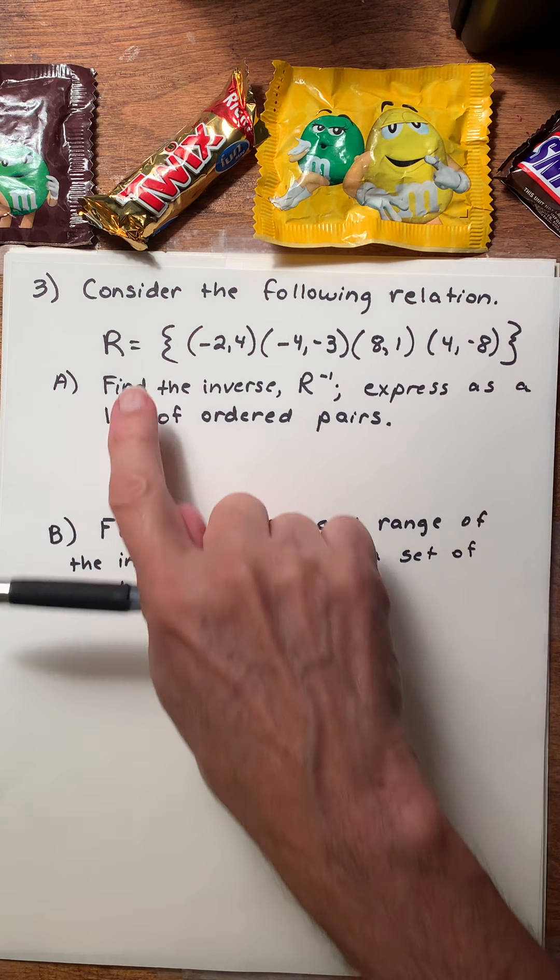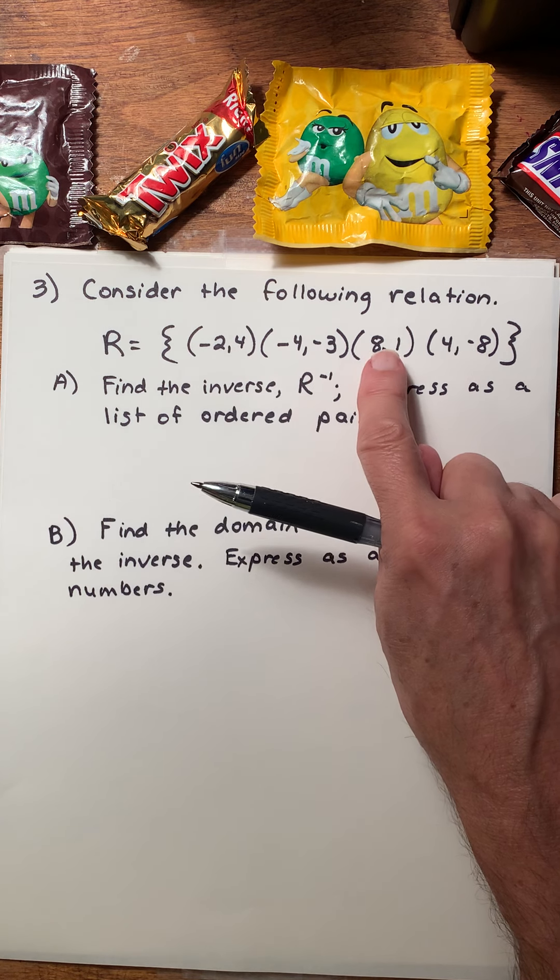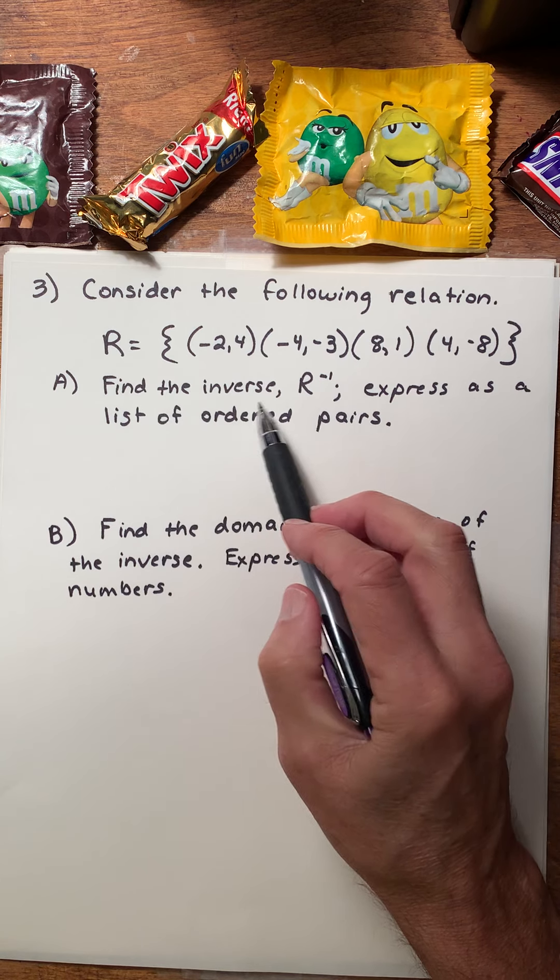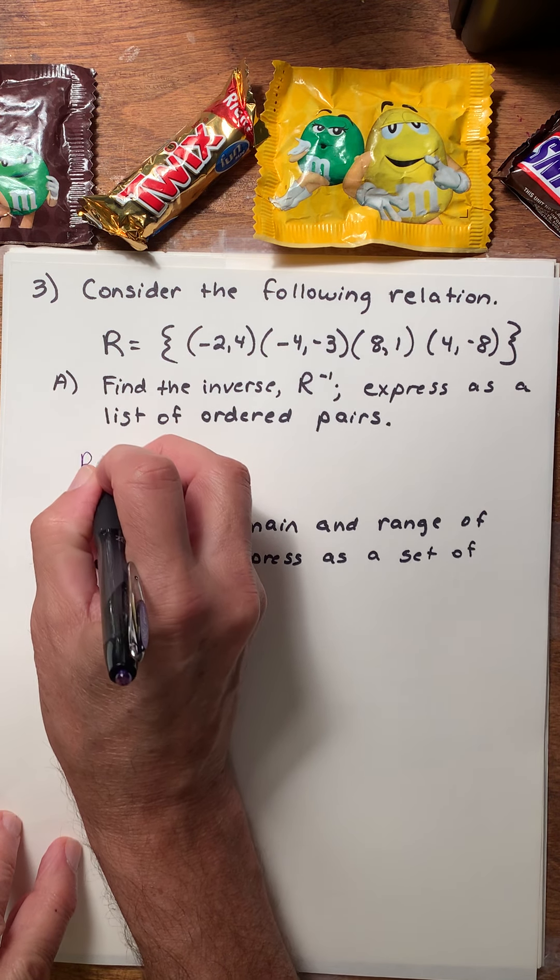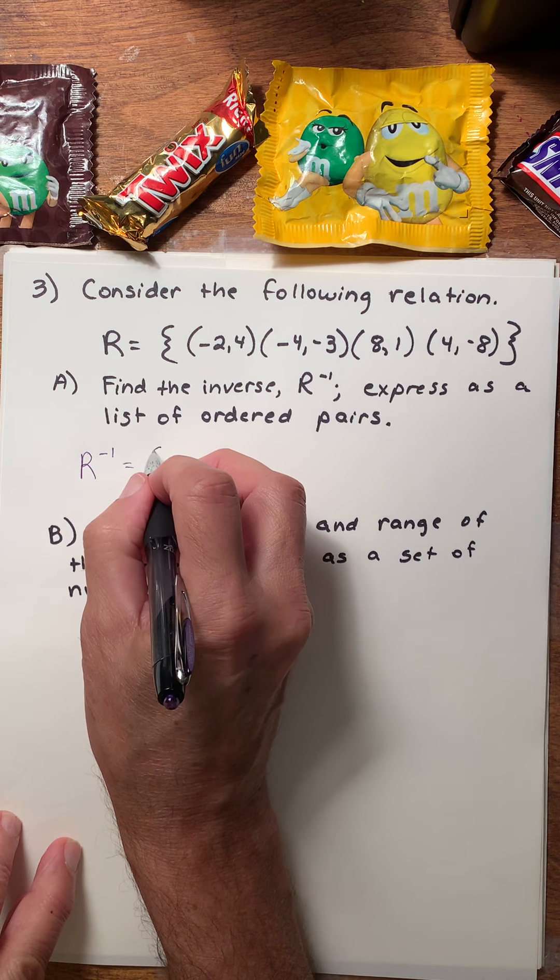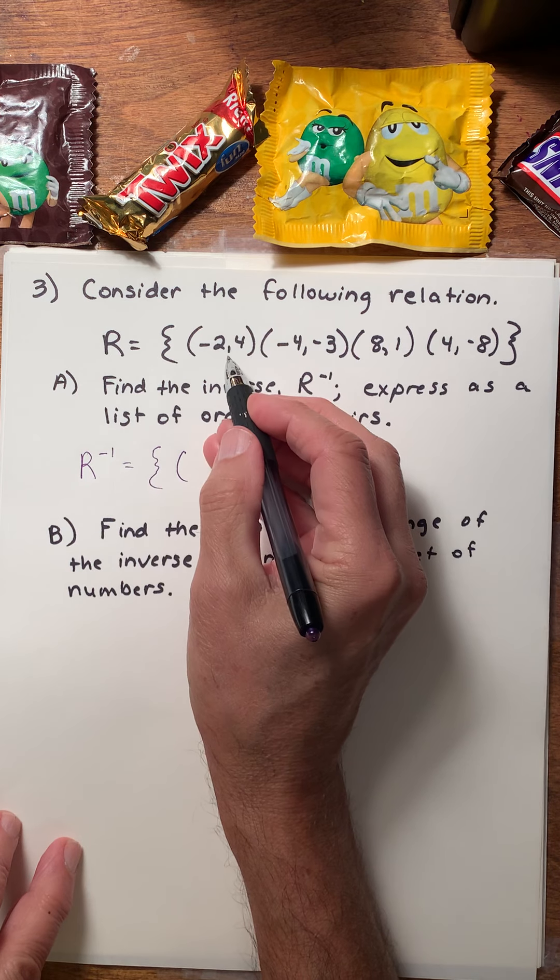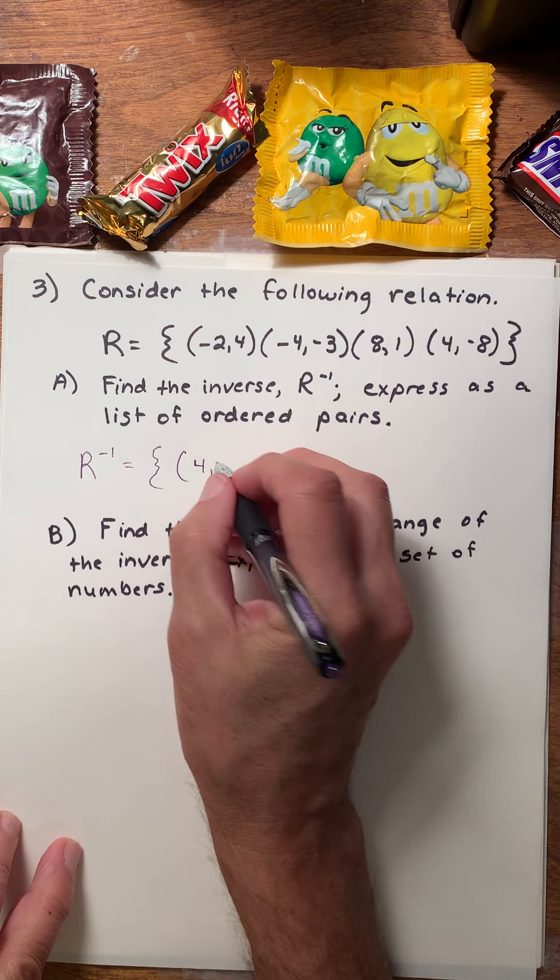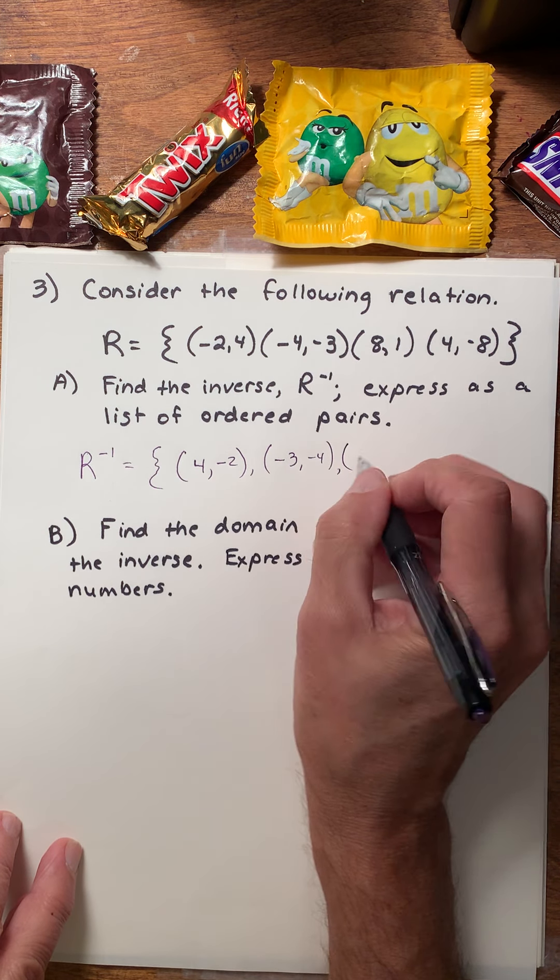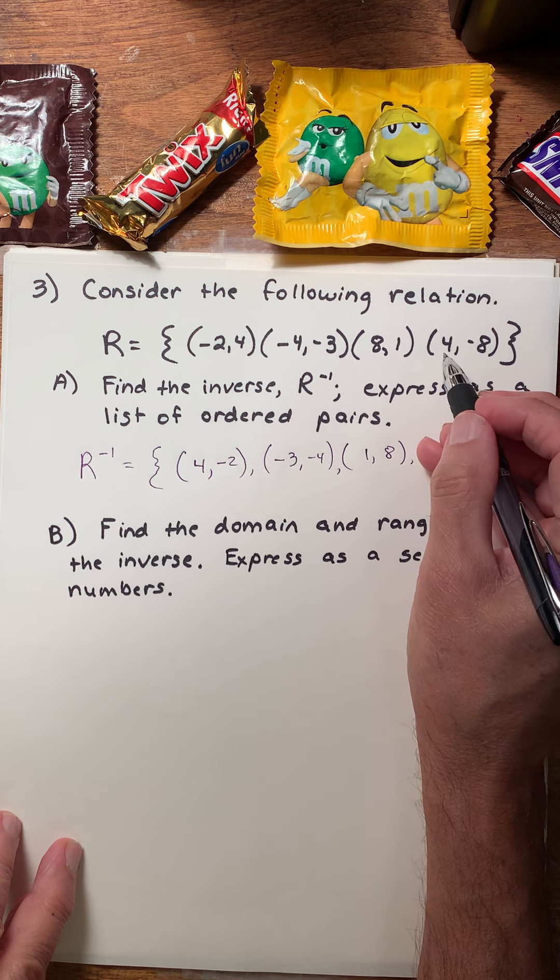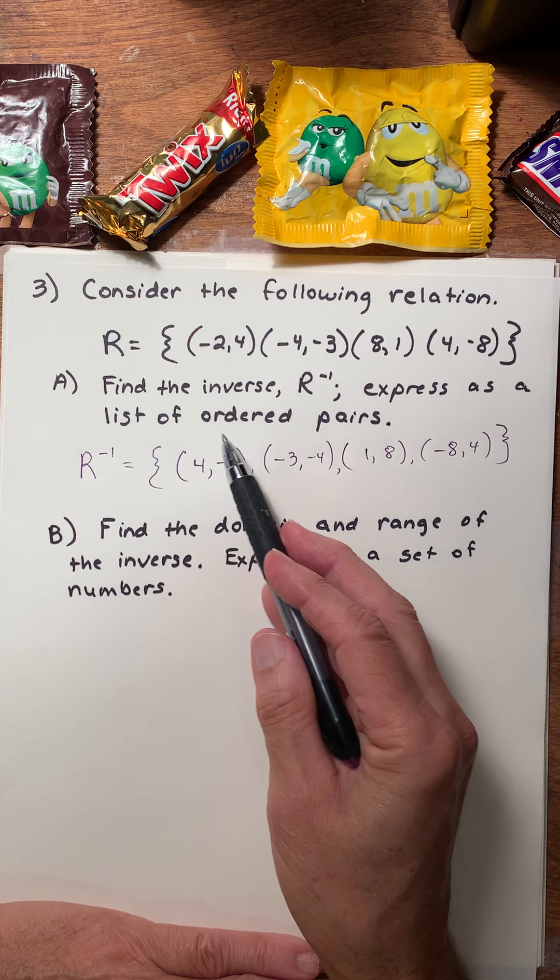Number three. Consider the following relation. Notice it's just a list of ordered pairs. This is one of the ways that we have been able to express a relation. Find the inverse, r inverse, and express it as a list of ordered pairs. Remember what an inverse does. For every xy, it gives you a yx. So I'm simply going to reverse the order of my ordered pairs. Instead of negative 2, 4, it's 4, negative 2. Instead of negative 4, negative 3, it's negative 3, negative 4. So there is the inverse expressed as a list of ordered pairs.